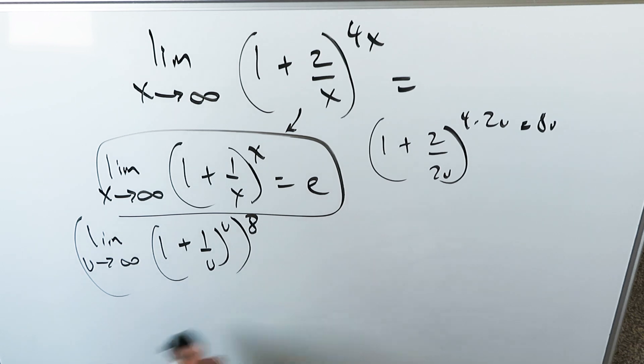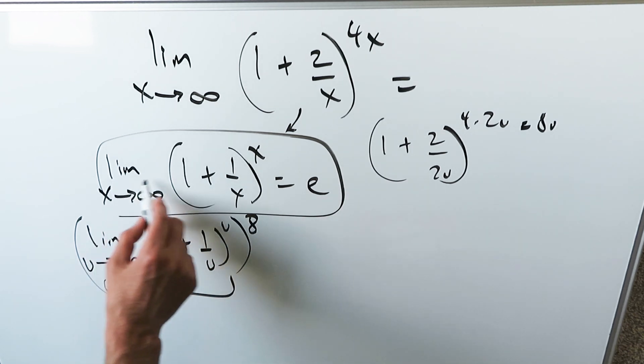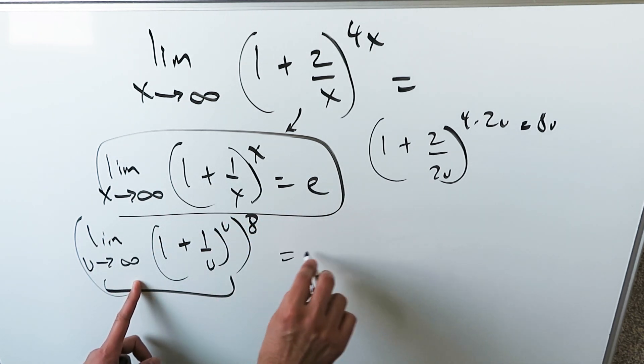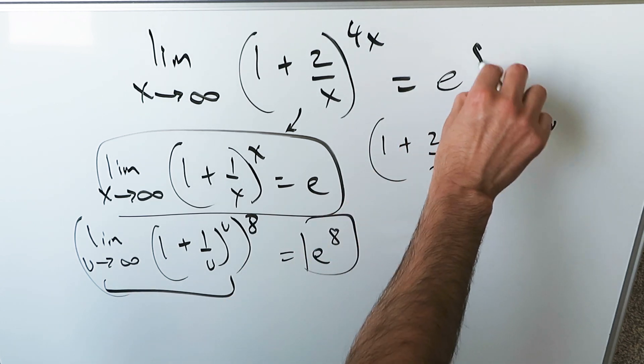By separating them out, I have this portion over here which looks exactly like this item in the box. From that box, I'm getting an e, but there's an 8 sitting out, and this e to the power of 8 must be your answer.